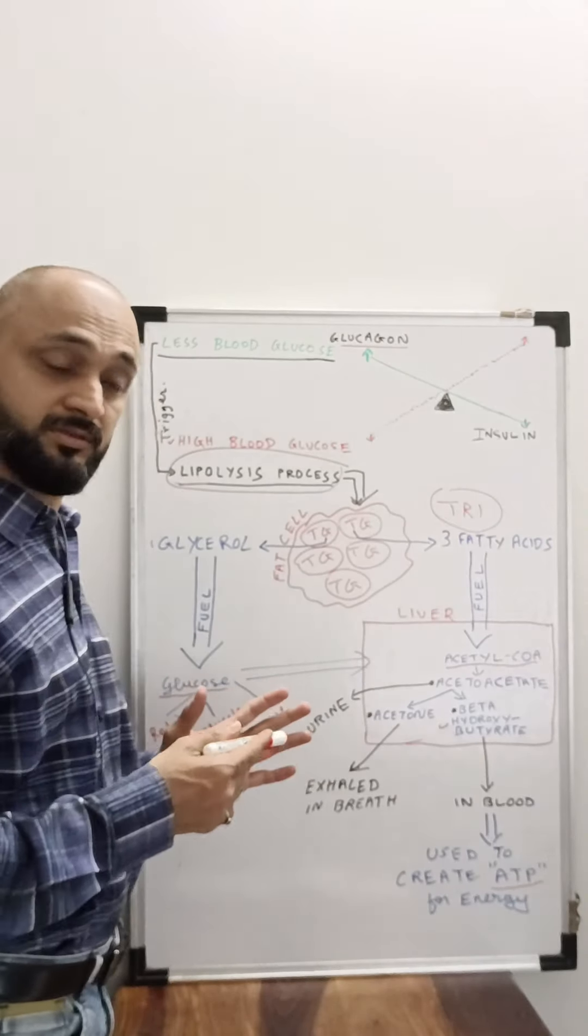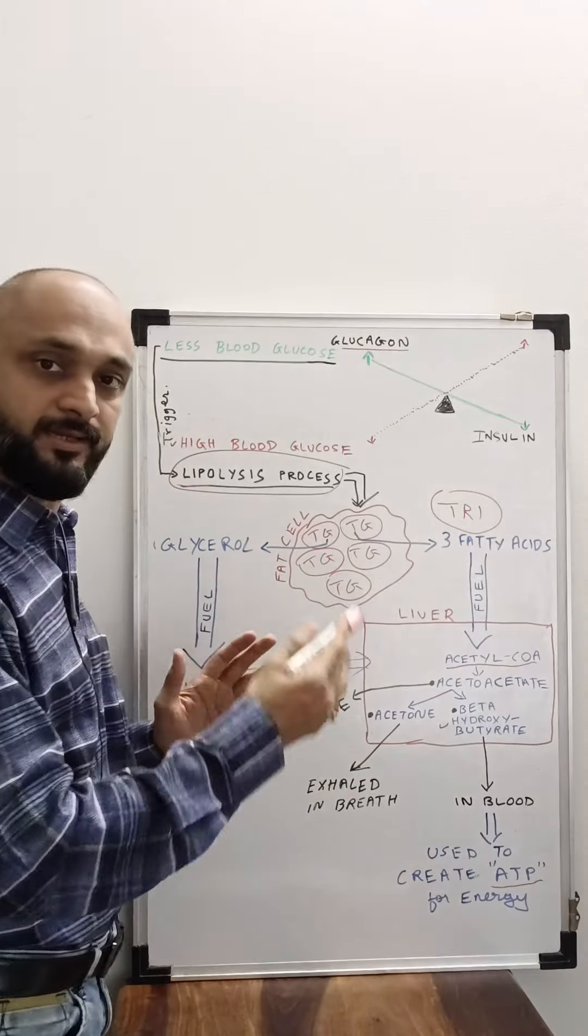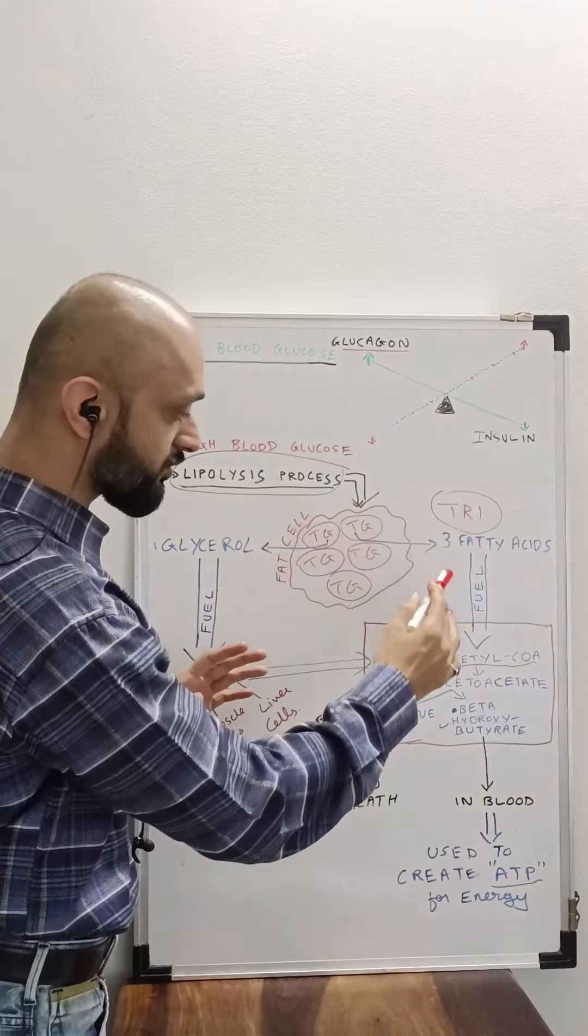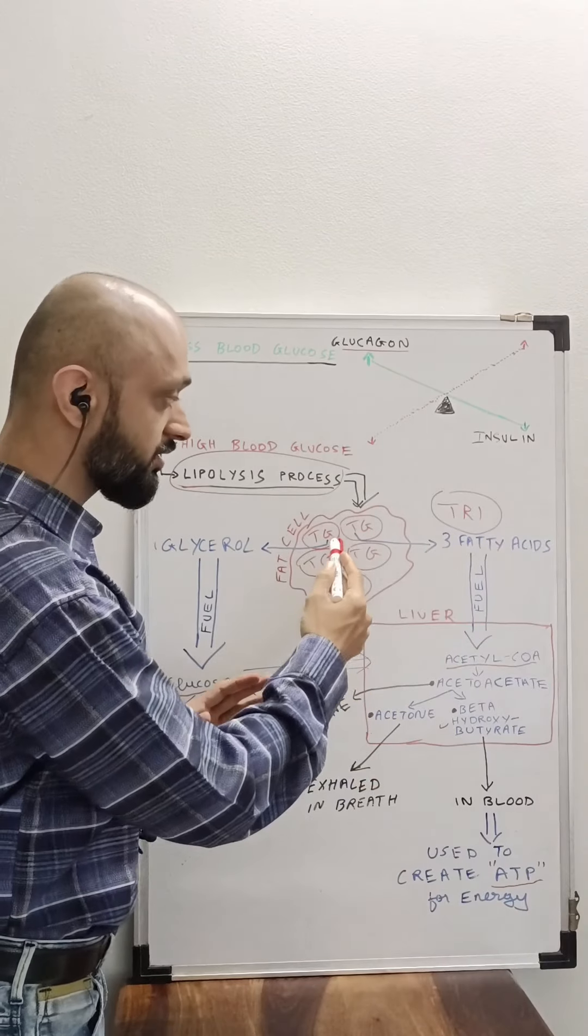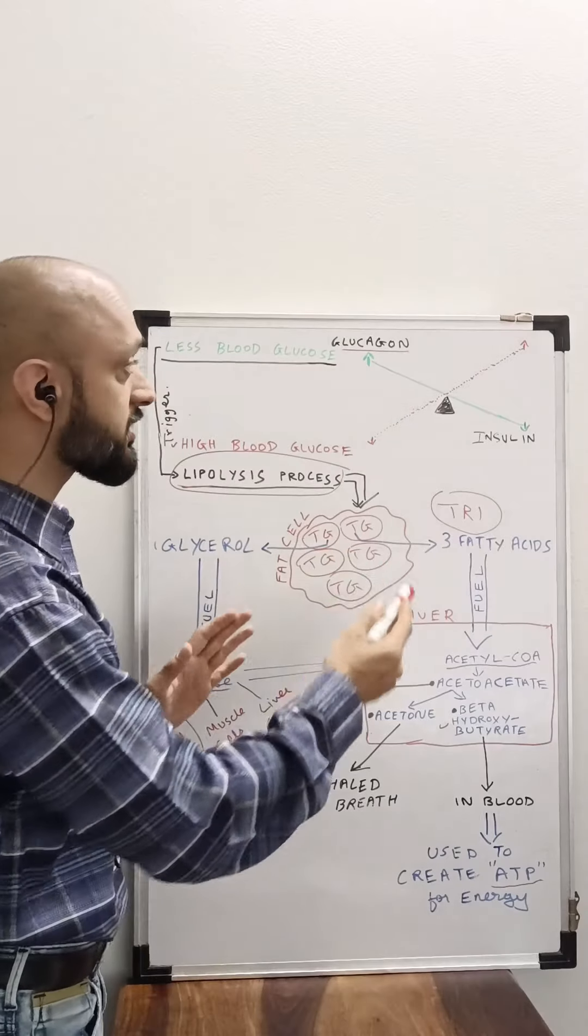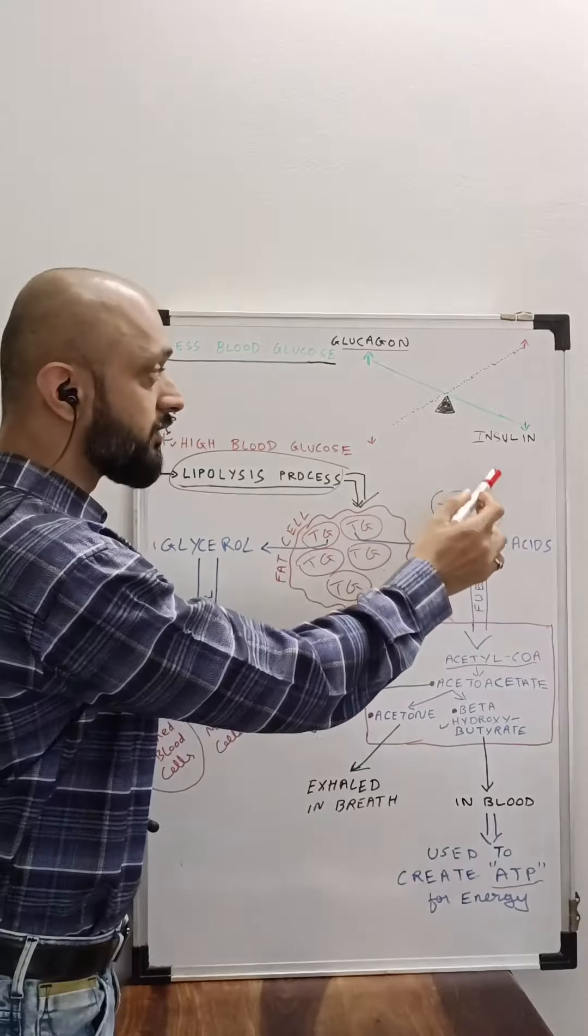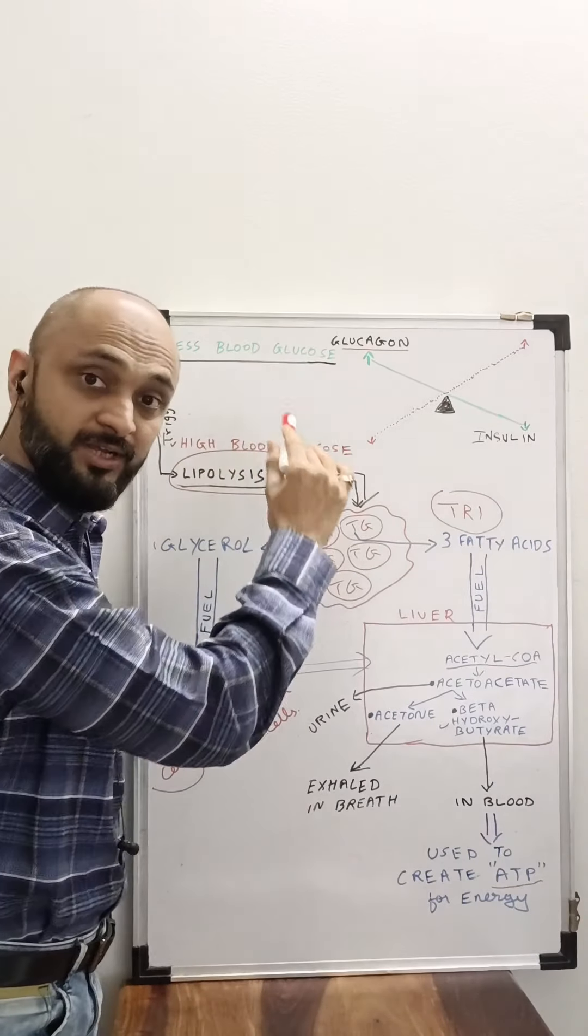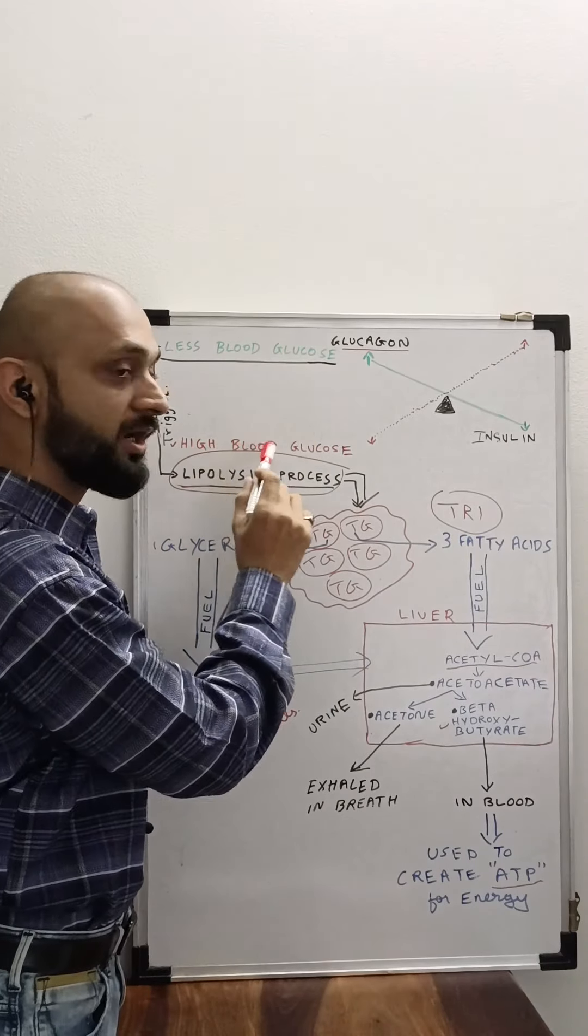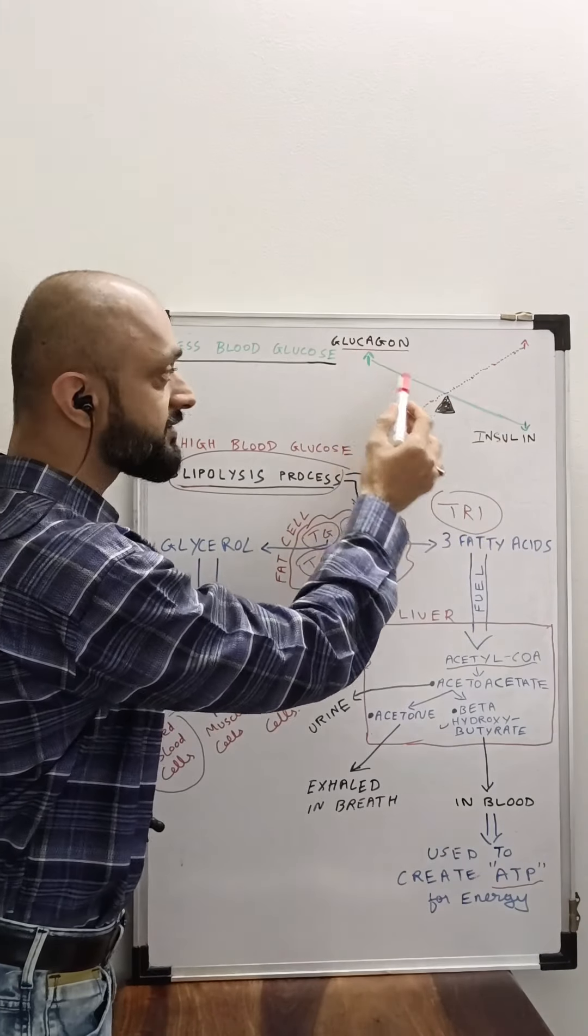Now we have understood what happens in the body which creates these ketone bodies. Let's consider the exact opposite scenario. When we discussed about the fat loss or utilization of triglycerides, the scenario was that glucagon was dominant and insulin was low, because the blood glucose level went down. Now let's consider the exact opposite scenario, that is when the blood glucose level is high.